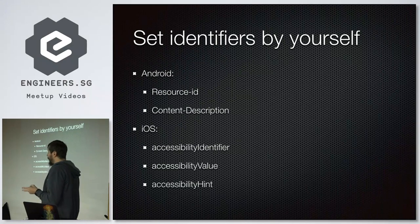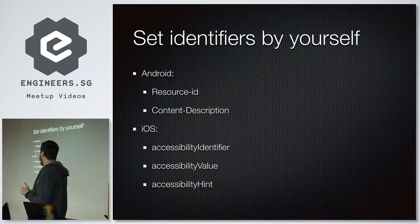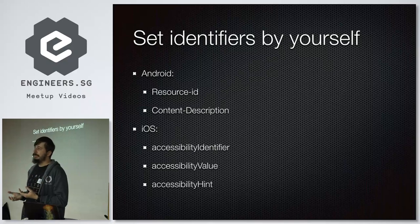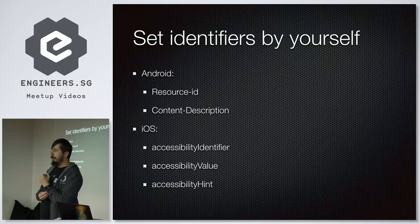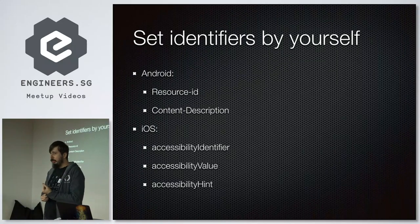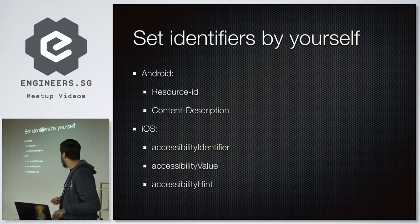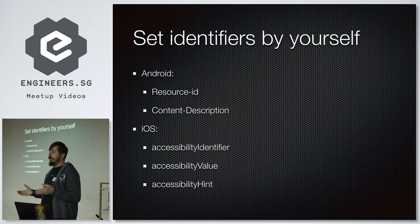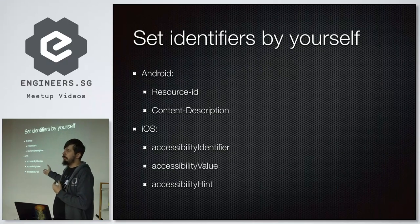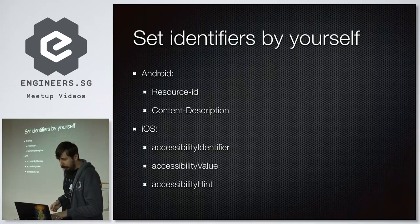Appium has a well-known problem with iOS when getting text label text — sometimes it simply cannot retrieve text from a text label. It seems like a basic operation, but it's an implementation issue on the iOS side. The workaround we used at Lazada: put the text from any text label into one of the accessibility parameters, and Appium was able to get it from there.